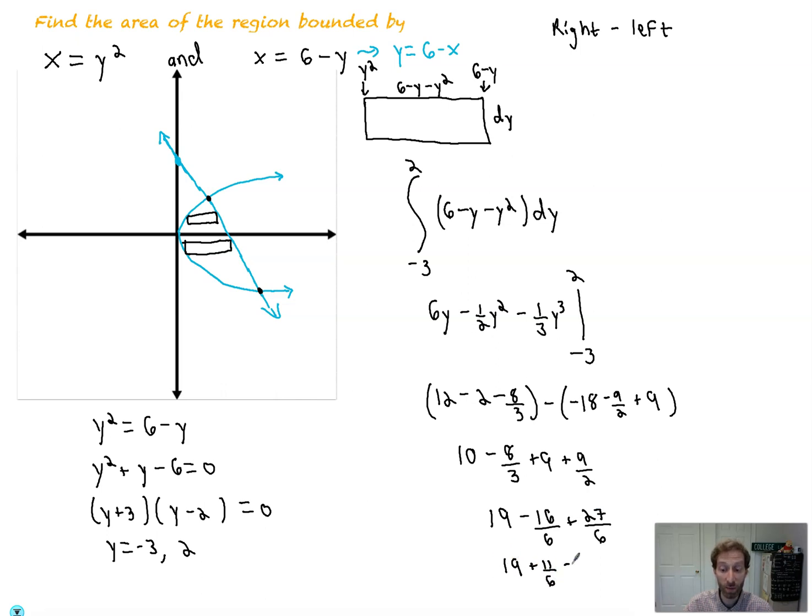6 times 19, because this will be over 6 if we really want to simplify all this down. Because you're not going to leave it as a mixed number. 6 times 19 is 114, I believe. Plus 11 is 125 sixths. All right. The key here is right minus the left.